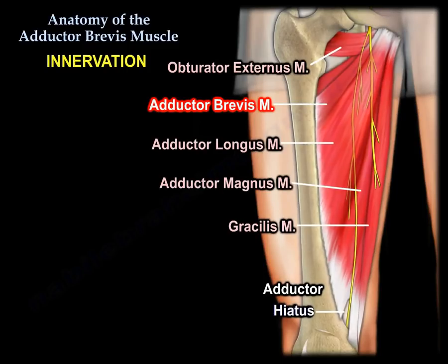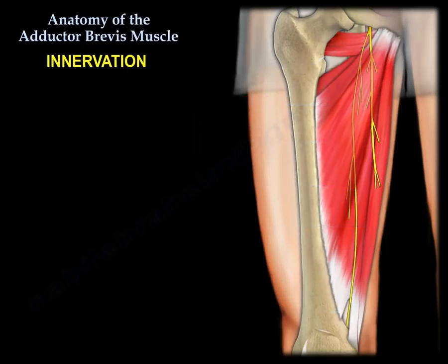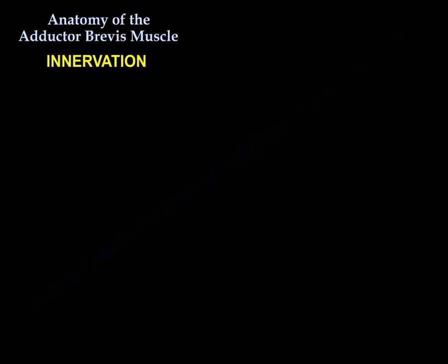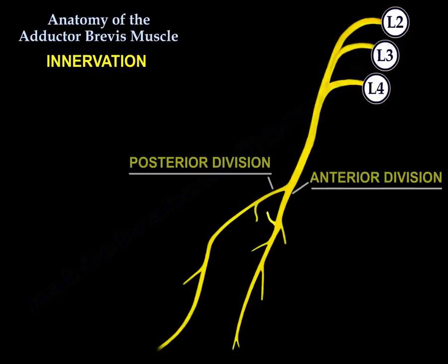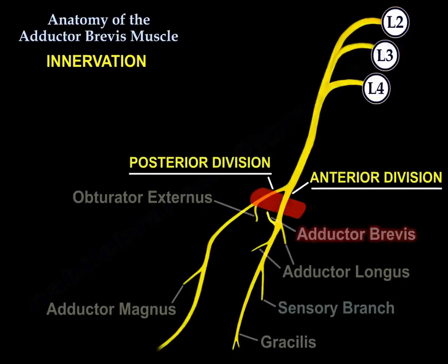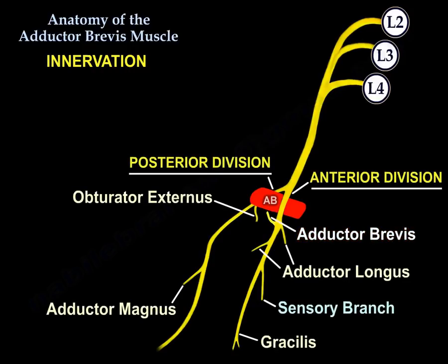Here is a diagram showing the obturator nerve, the anterior and the posterior divisions, and the muscles supplied by each division.